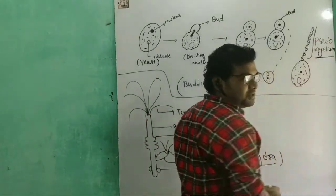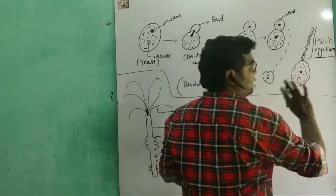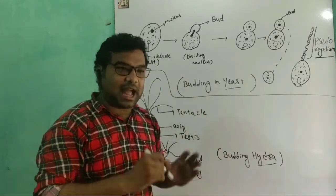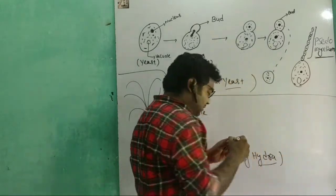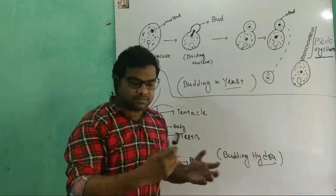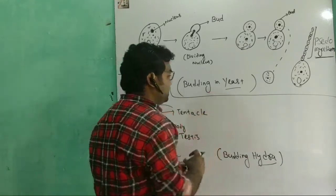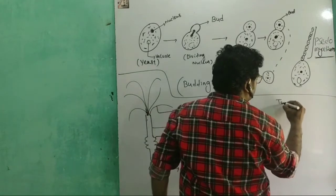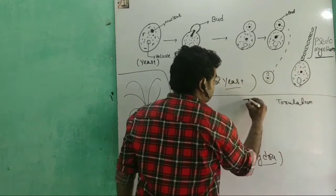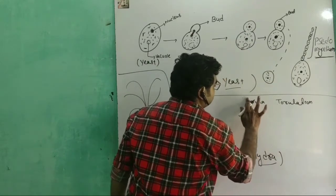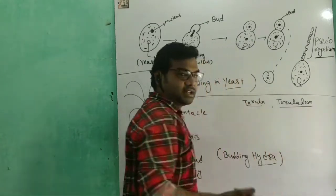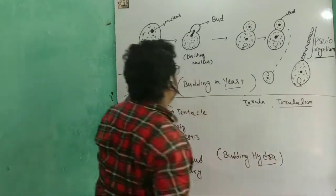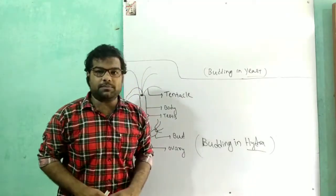A chain of buds is produced in the parent yeast. This chain of bud formation is known as pseudomycelium. The buds in yeast resemble the parent body in shape and size.